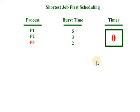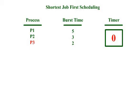In this example, we have three processes P1, P2, and P3, and a timer which represents the total number of time required to complete all the processes. According to the Shortest Job First algorithm, assuming that all processes come into the ready queue at the same time, process P3 will be executed first because of its smallest burst time.